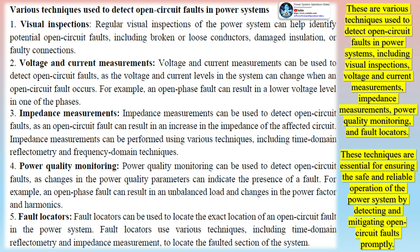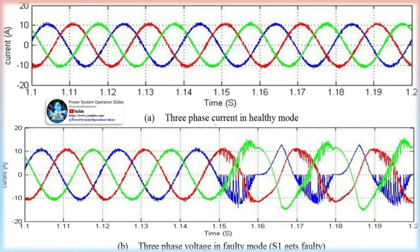A ground fault is a type of fault that occurs in power systems when a conductor makes direct contact with the ground or an object in contact with the ground. Ground faults can occur due to equipment failure, poor insulation, lightning strikes, or accidental contact with a conductor. When a ground fault occurs, the current flowing through the affected conductor is diverted to the ground, resulting in a sudden increase in current flow, which can lead to equipment damage, power outages, electrical fires, and electric shock hazards to personnel.